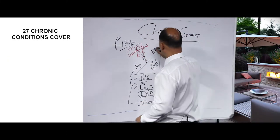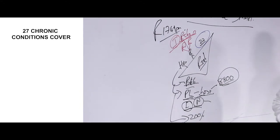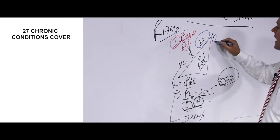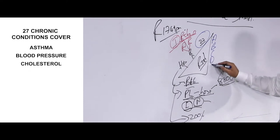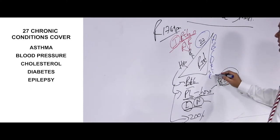You will be covered for the 27 chronic conditions as laid on by law, which includes things such as asthma, blood pressure, cholesterol, diabetes, epilepsy, and cancer.